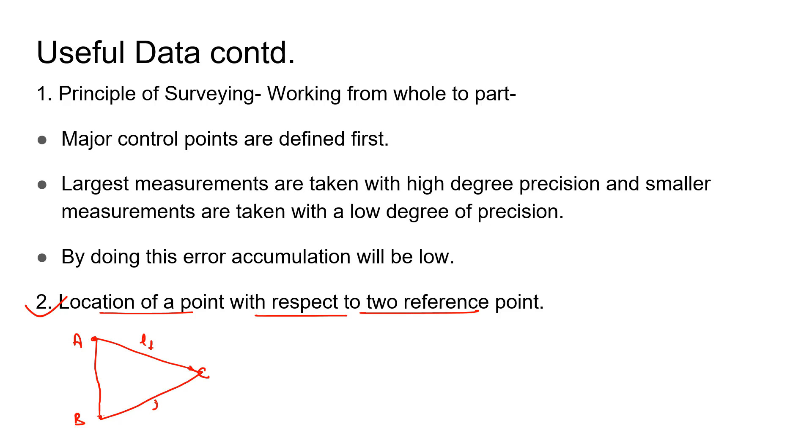Like that, we can find the location of another point with respect to two reference points. This method is known as the chain method.